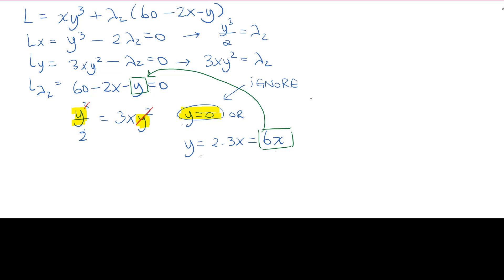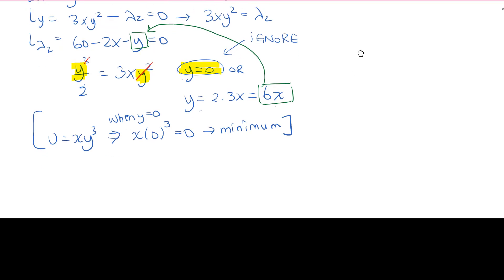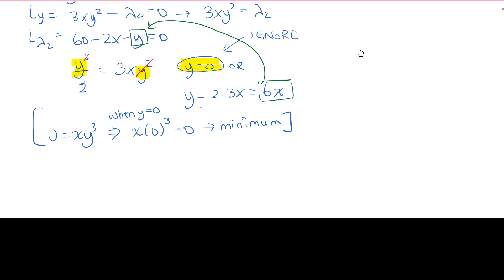I'm going to ignore the y equal to 0 cases. You can check them if you'd like. You can ignore them because of the following. So our utility function is x times y cubed. So when y equals to 0, our utility just drops down to 0. So this is actually our minimum solution instead of maximum. When y is 0, we get a minimum utility. What we're looking to do is maximize the utility. So we're going to ignore that solution. Some of you, if you were solving this problem on your own, wouldn't even realize that y equals to 0 is a possible solution.